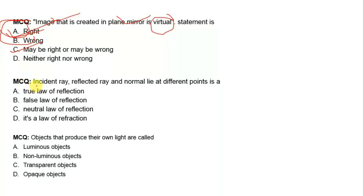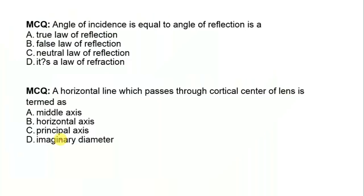Next question: incident ray, reflected ray, and normal are at the same point — this is a false law of reflection. Next question: objects that produce their own light are called luminous objects. Next question: angle of incidence is equal to angle of reflection — this is the true law of reflection.